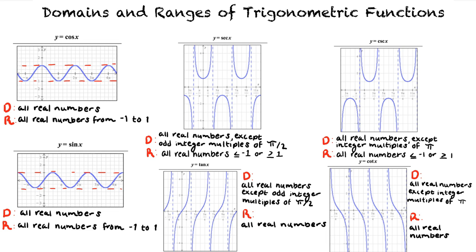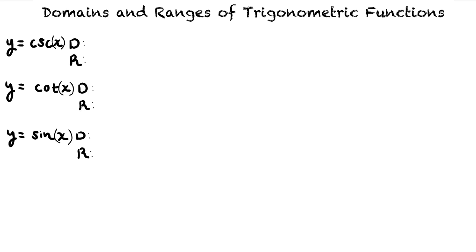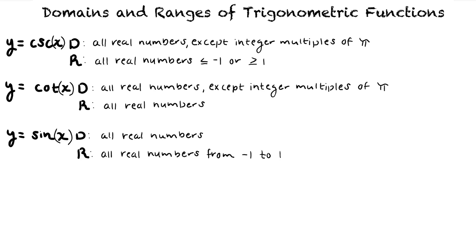Now that we have this information, we can fill in the blanks on the problem. For y equals the cosecant of x, the domain is the set of all real numbers except integer multiples of pi, and the range is the set of all real numbers less than or equal to negative 1 or greater than or equal to 1. For y equals the cotangent of x, the domain is the set of all real numbers except integer multiples of pi and the range is all real numbers. For y equals the sine of x, the domain is all real numbers and the range is from negative 1 to 1. We can use the same information to determine the domain and range in other problems of this type.